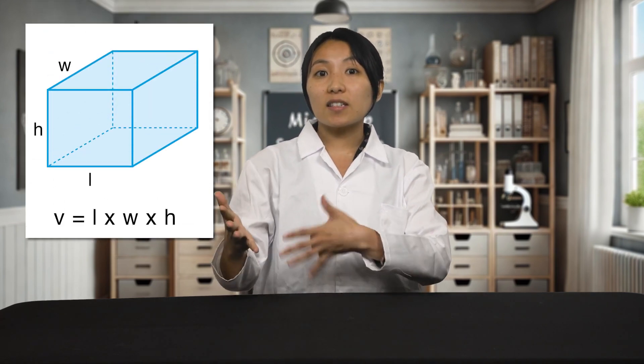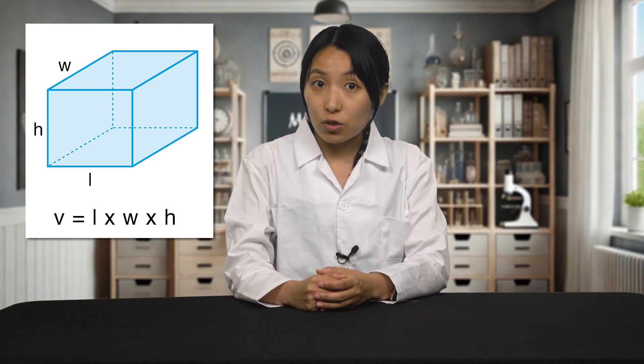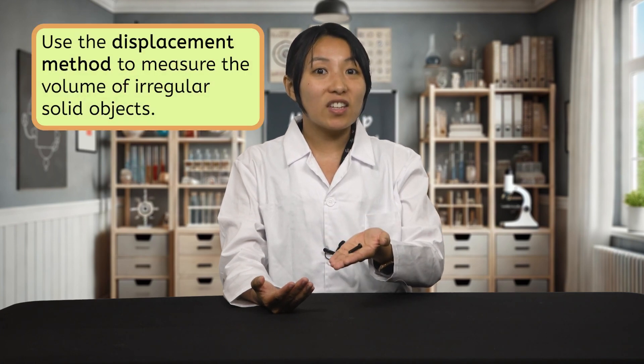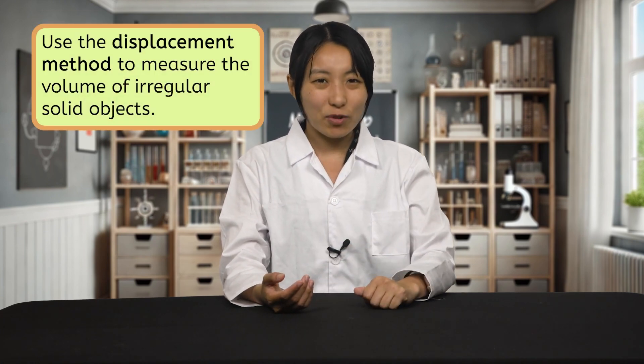But how do we measure the volume of solid objects? Since volume is how much space something takes up, we can multiply the length times the width times the height. This gives us the volume in cubic centimeters, which is equivalent to the milliliters used to measure liquid volume. But here's where things get tricky. Irregularly shaped solid objects, like this screw, can be difficult to measure in volume. We can't multiply length by width by height because this is not a cube. Instead, we'll use a technique called the displacement method to measure the volume of irregular solid objects.